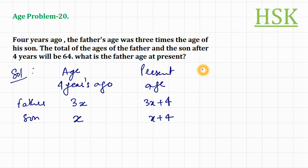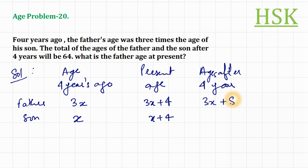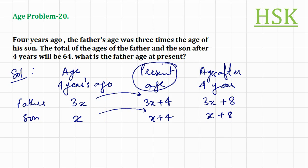Ages after four years would be 3x plus 4 plus 4, that is 3x plus 8, and x plus 8. The ages we took four years ago were 3x and x. After four years they grow four years older, giving us the present ages. Then four years further, they grow four more years older, so the ages would be 3x plus 8 and x plus 8.